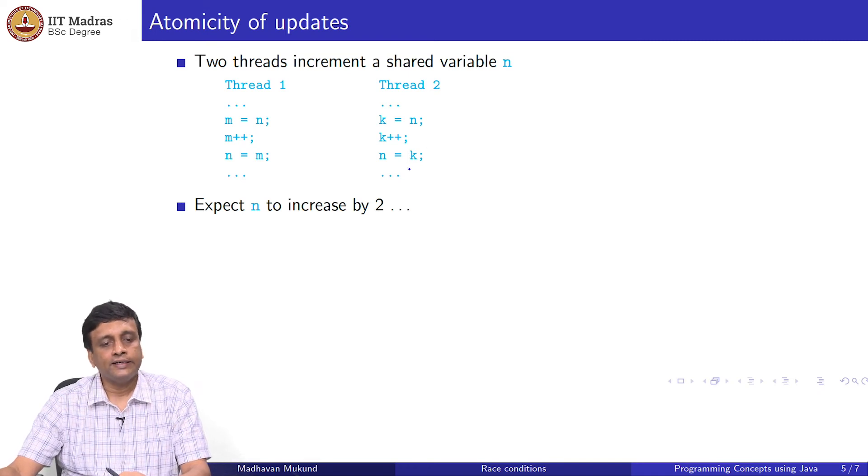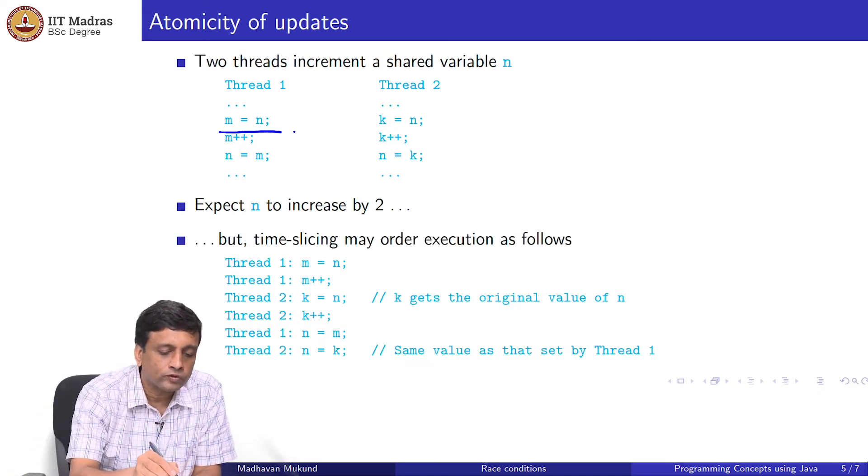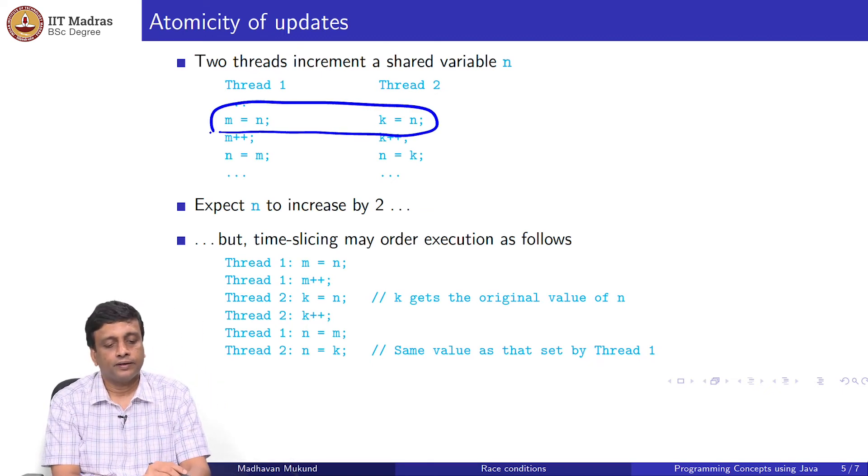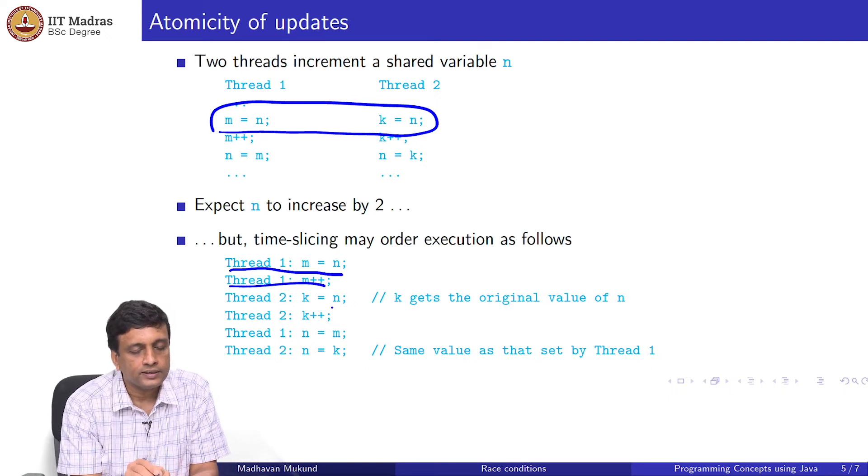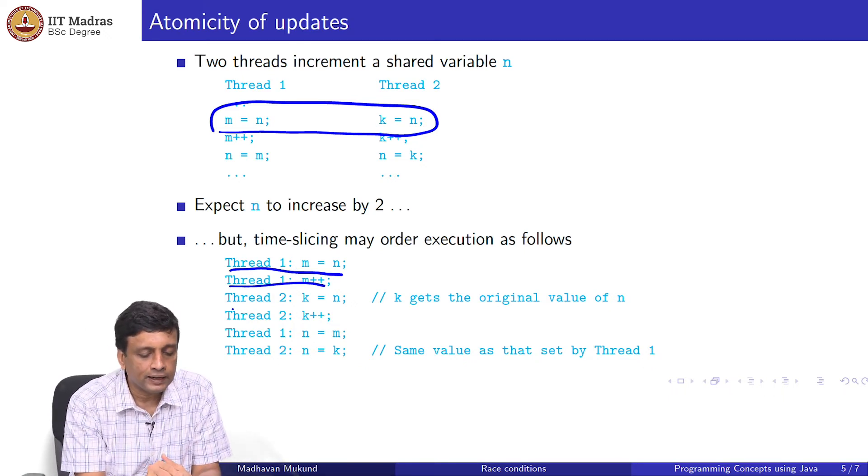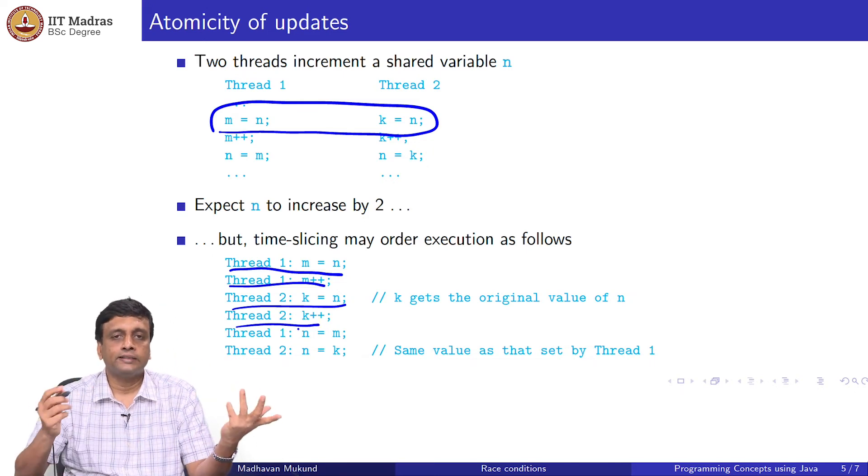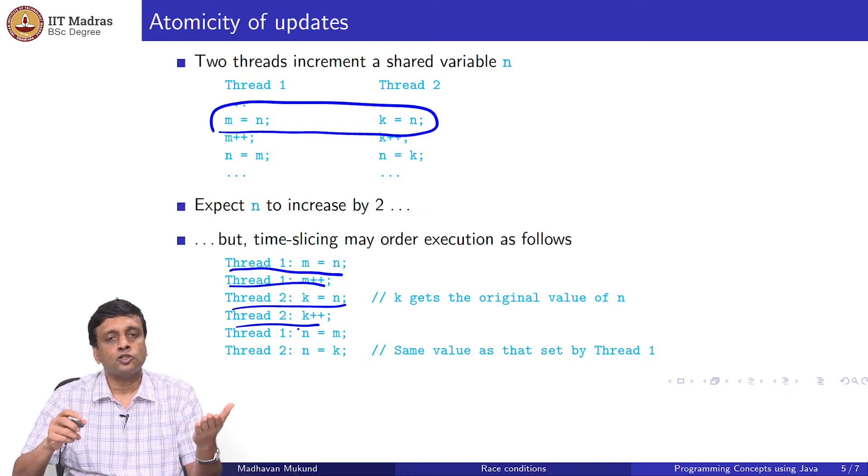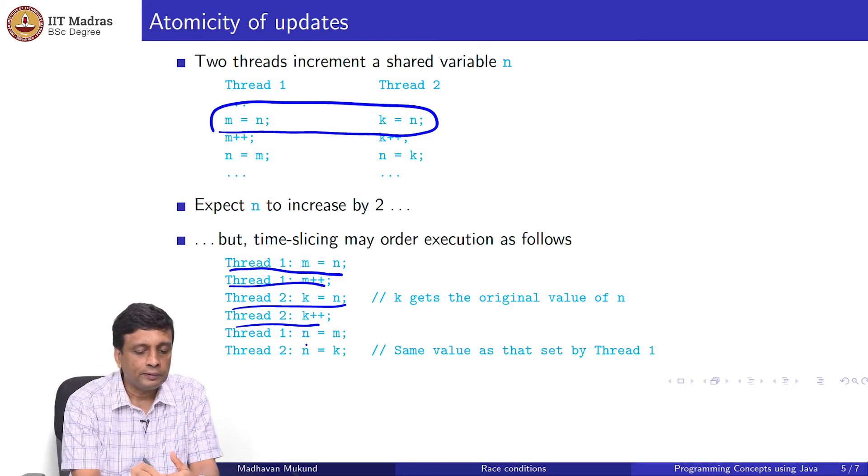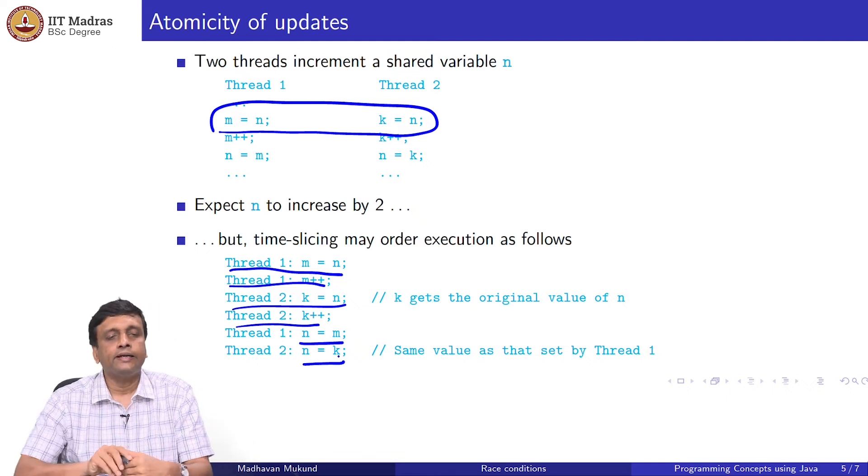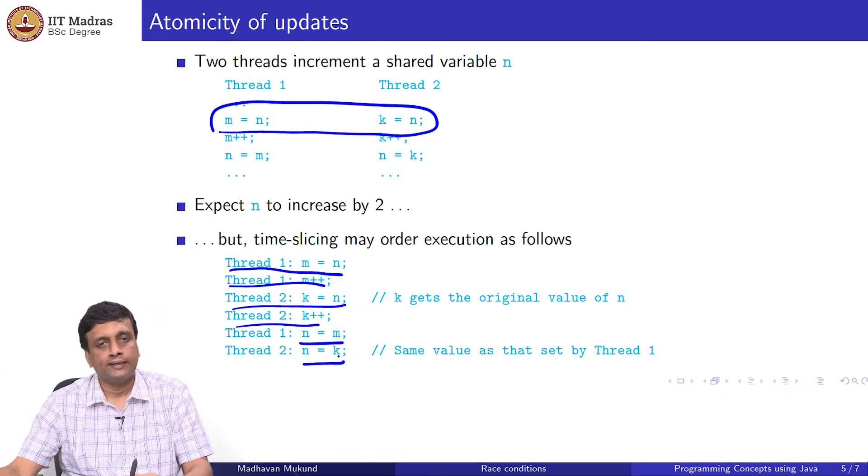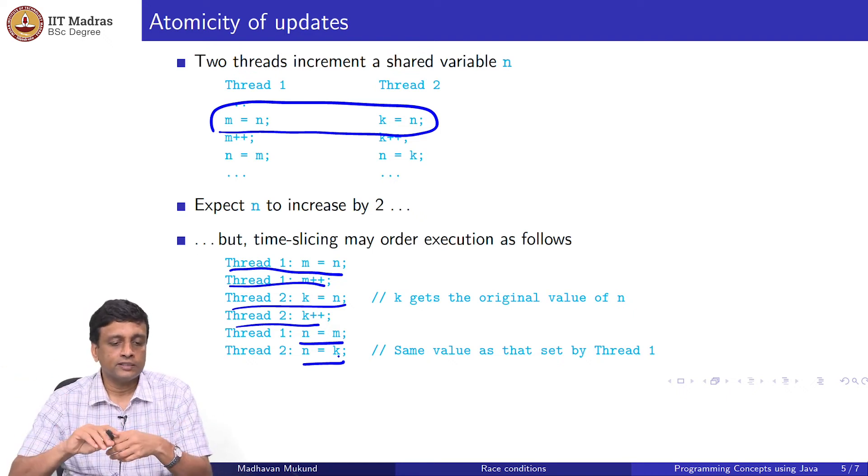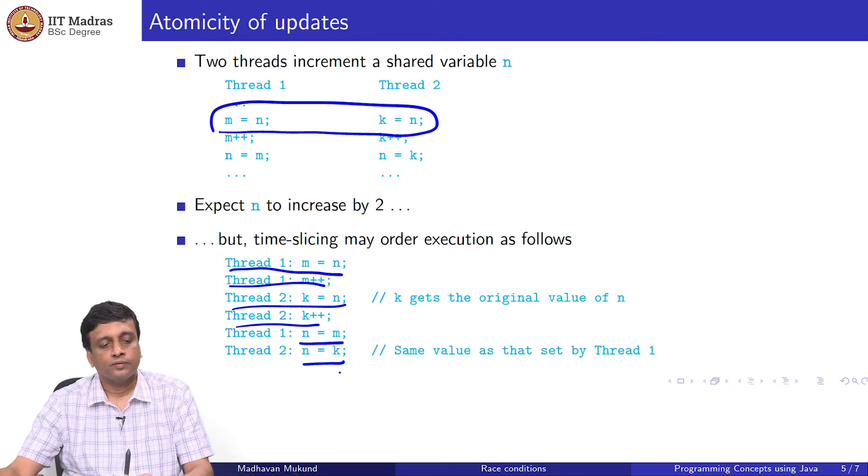But because of interleaving, what could happen is that both of them end up seeing the same value of n. This one reads n and increments, but before it writes it back, the other one reads the old value n and increments. Say the initial value is 17, then m has gone from 17 to 18, k has also gone from 17 to 18. Now I will write back 18 from m, then I will again write back 18 from k. I have lost this one update. I have made an incorrect update, which is not logical in some sense, because one increment has been lost.